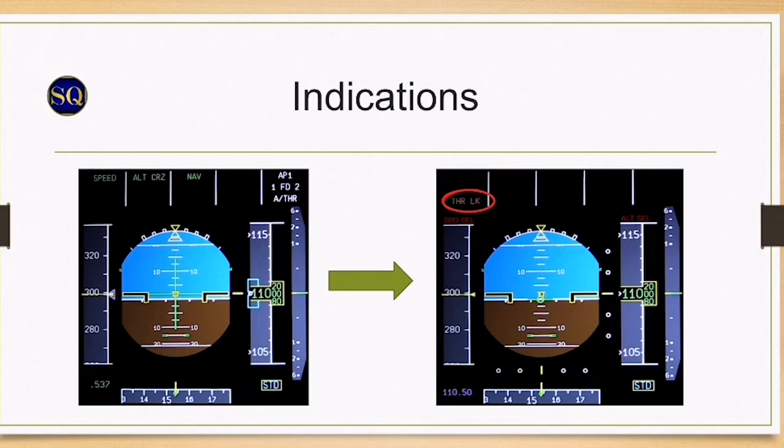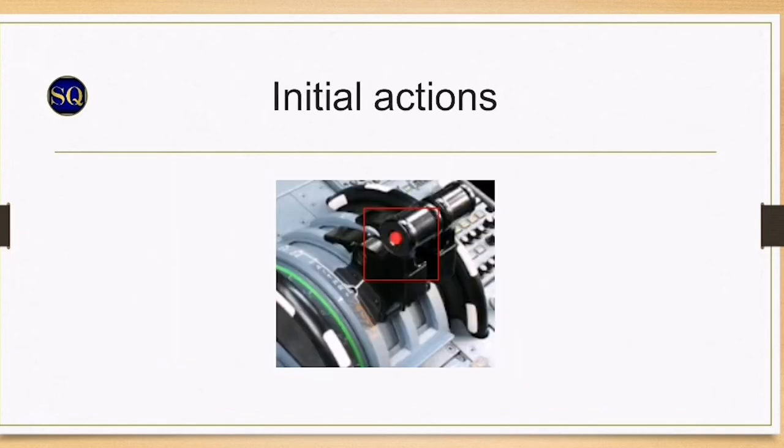Following the loss of both FCU channels, the thrust is in thrust lock. Adjust the thrust levers to the thrust setting and press the instinctive disconnect button, which is the red button, to remove thrust lock.